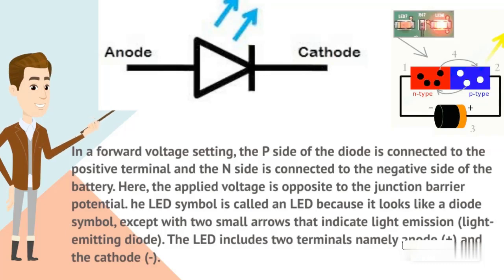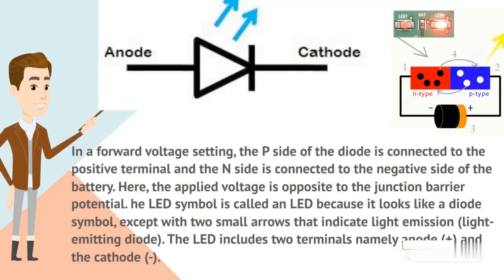The LED symbol looks like a diode symbol except with two small arrows that indicate light emission. The LED includes two terminals, namely the anode which is positive and the cathode which is negative.